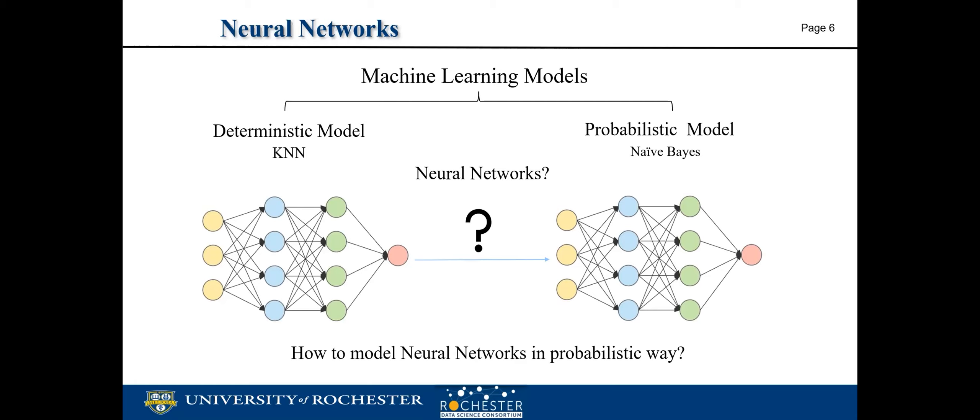As neural networks are very flexible and scalable, what about using neural networks as a surrogate model? The answer is yes, but without some operation, neural networks are a deterministic model. So the key point here is how to model neural networks into a probabilistic way and adapt neural networks to the Bayesian optimization framework.